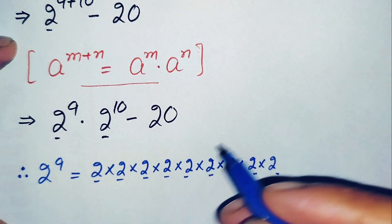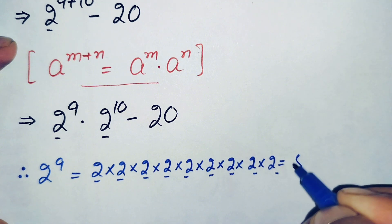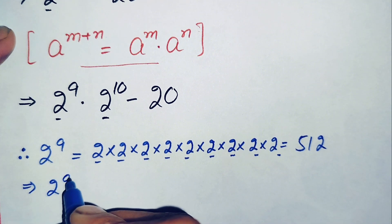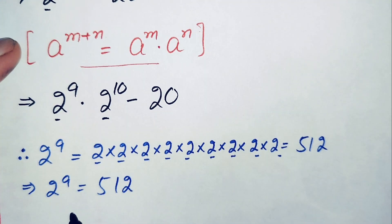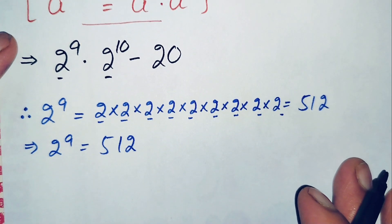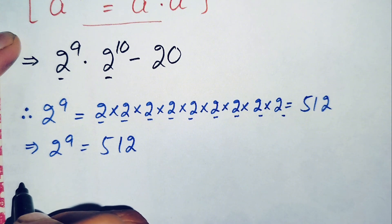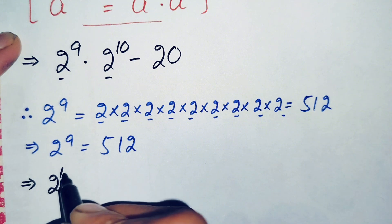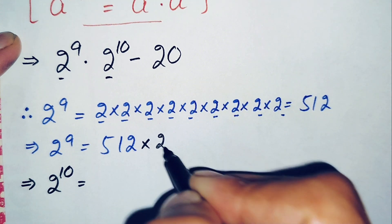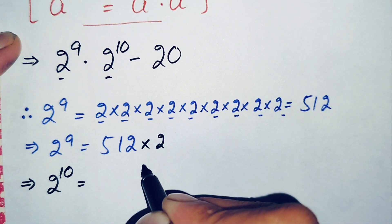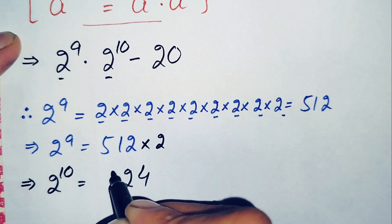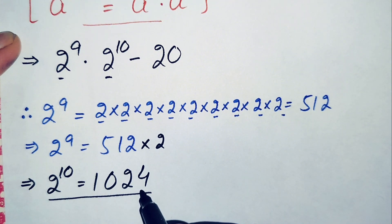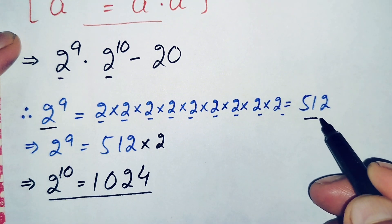So multiplying 2 nine times gives us 512. Therefore the value of 2 raised to power 9 is 512. Now we will find the value of 2 raised to power 10. Since 2 raised to power 9 is 512, we will multiply that by 2. So 512 times 2: 2 times 2 is 4, 2 times 1 is 2, and 2 times 5 is 10. So the value of 2 raised to power 10 is 1024.